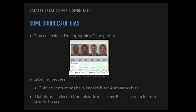Bias enters in two main ways: the data collection itself — are you collecting enough data across all demographics? Data collected in a wealthy US neighborhood may not capture other ethnicities; or data from 2004–2008 may be outdated. Bias also enters in the labeling process — so-called 'ground truth' can have biases from guiding questions, annotator biases, or if the process is semi-automated using historic data that carries historic biases.